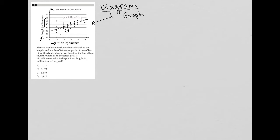So let's look at the actual question. The question says the scatter plot above shows data collected on the lengths and widths of iris setosa petals. A line of best fit for the data is also shown. So we already saw all of that information on the graph.